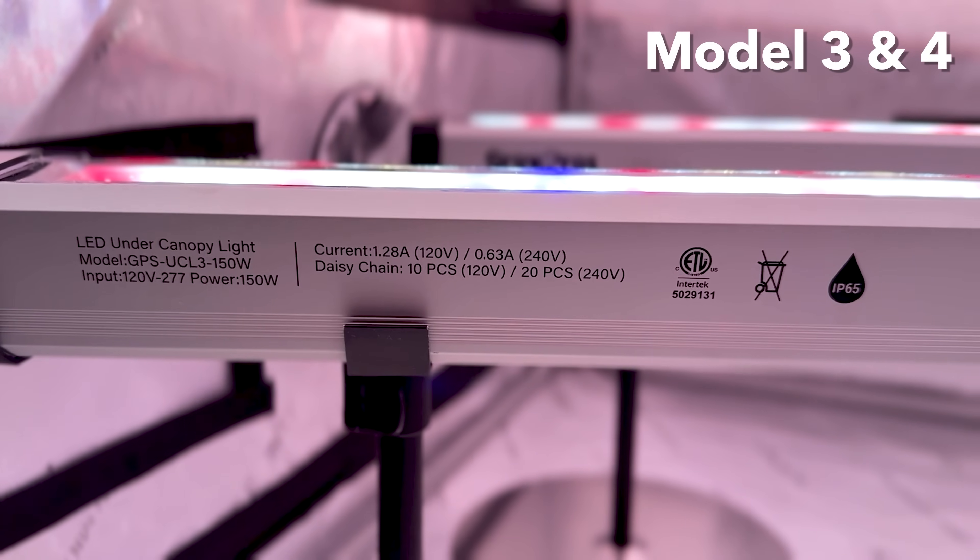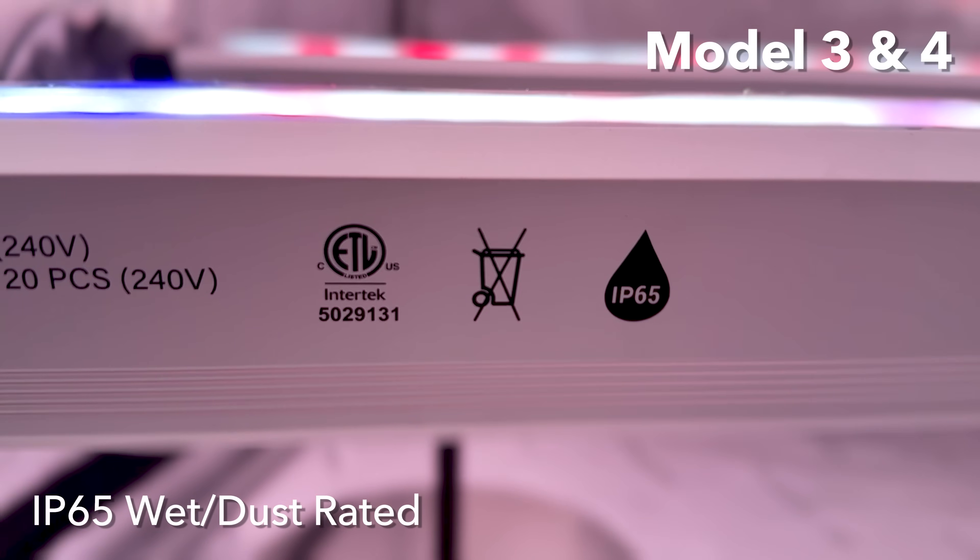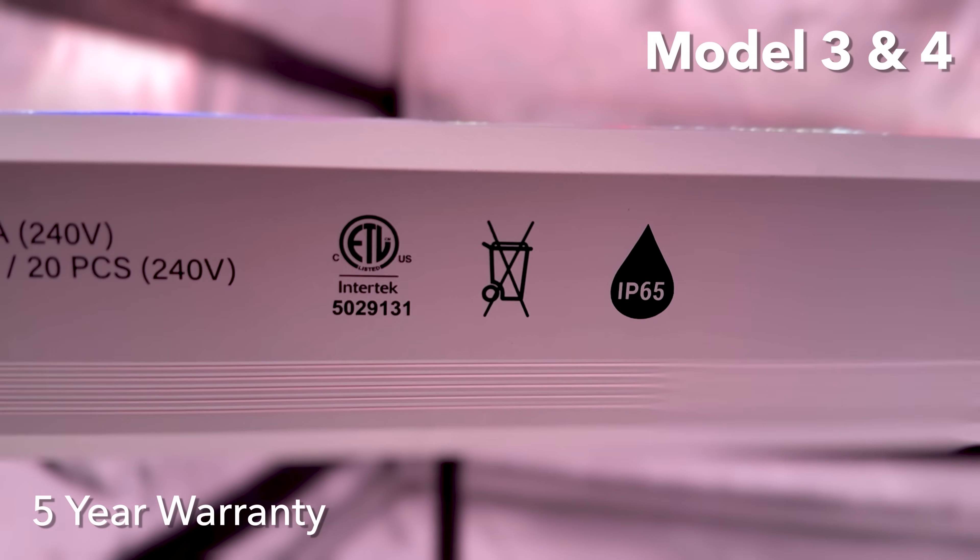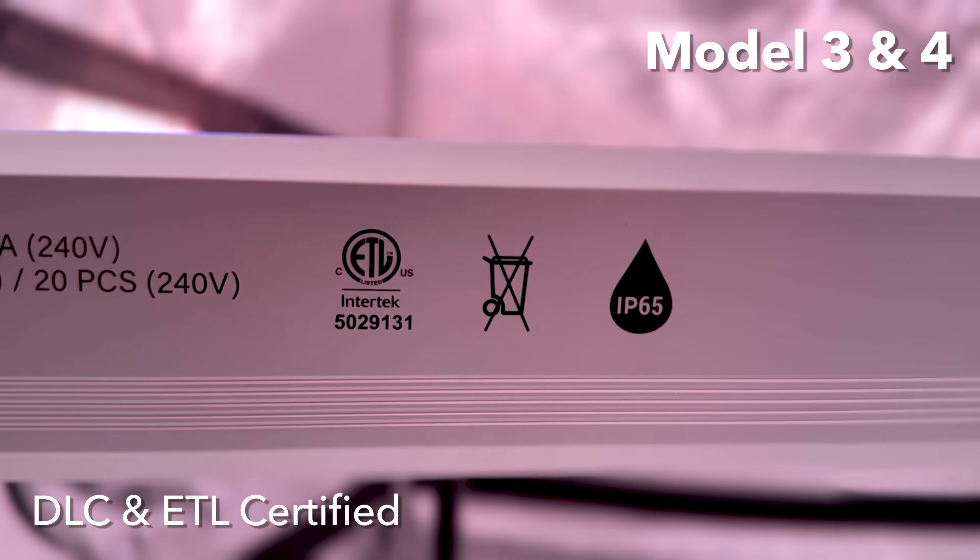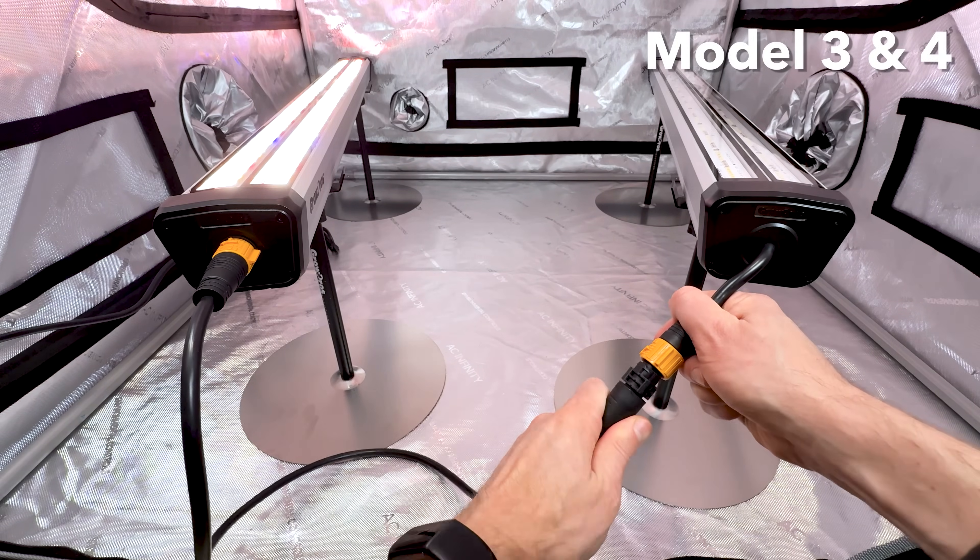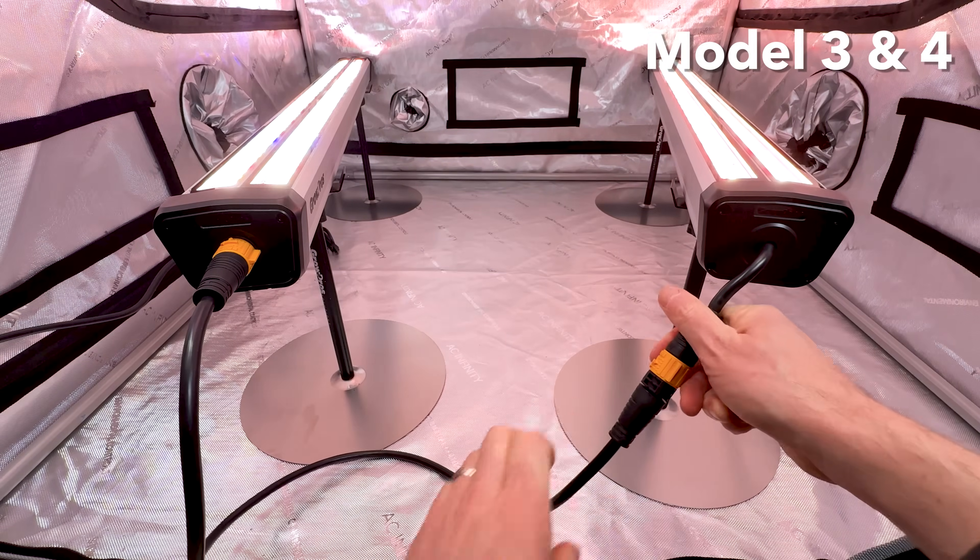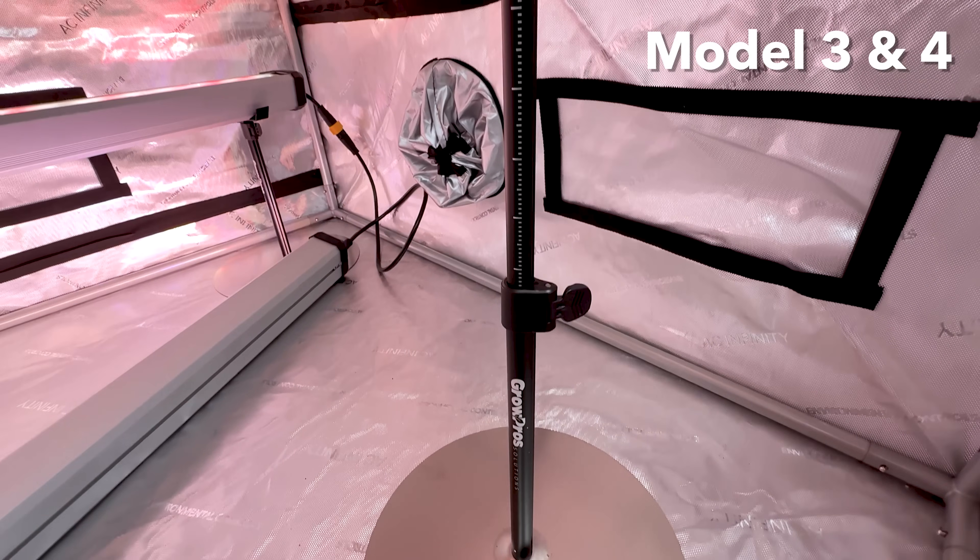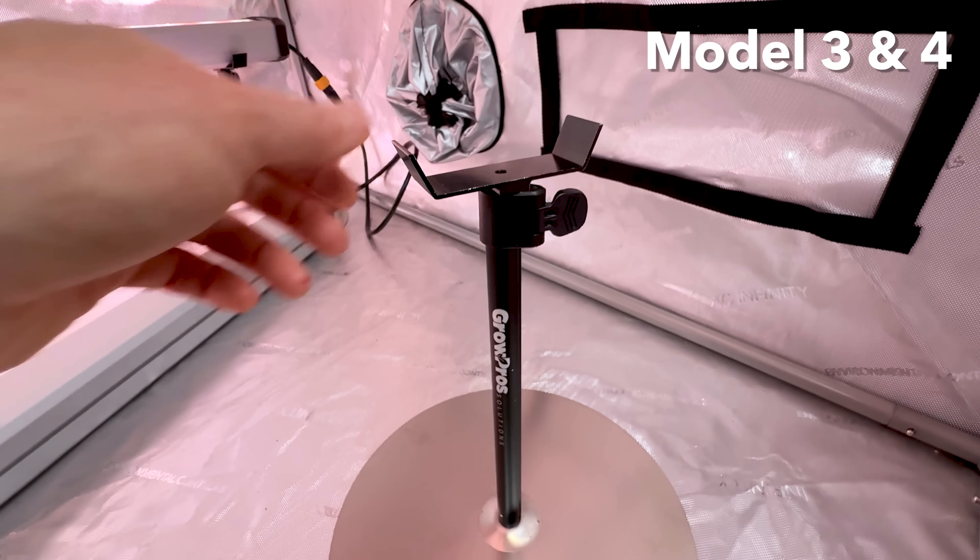Built for commercial cultivation, these lights contain an integrated driver, are IP65 rated, designed for longevity with a five-year warranty, and eligible for energy rebates due to their DLC and ETL certifications. Three foot daisy chain cords are available for these lights as well as 120 volt or 240 volt power cords. The stainless steel adjustable height pod stands are also optional add-ons.